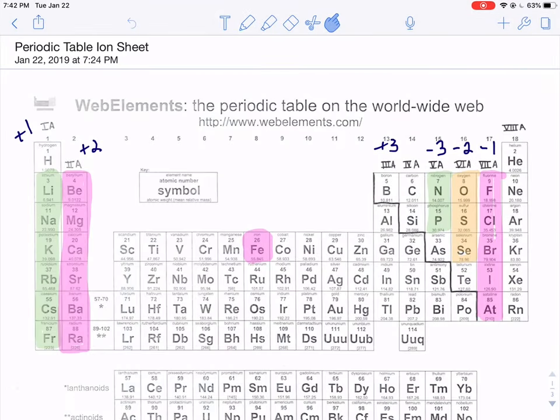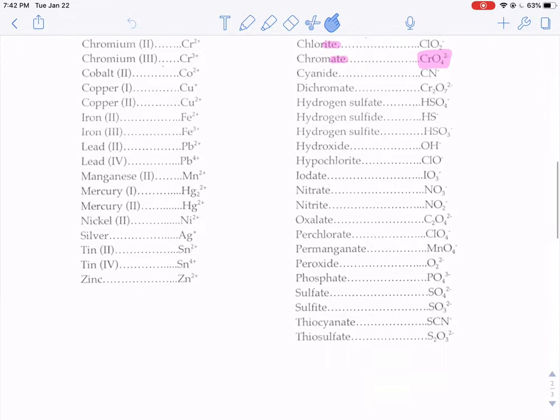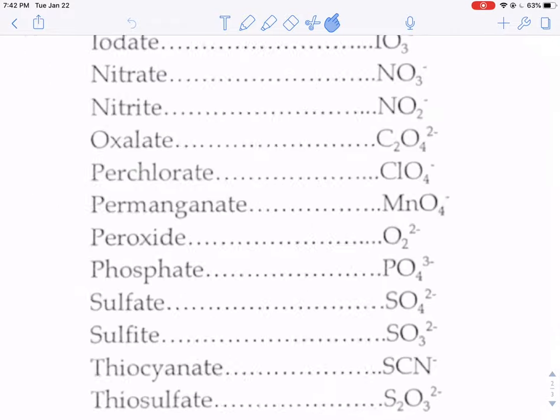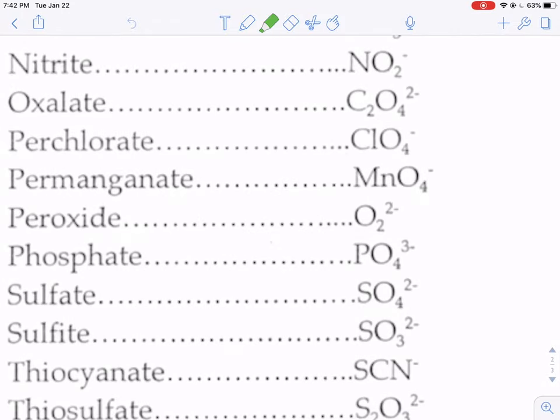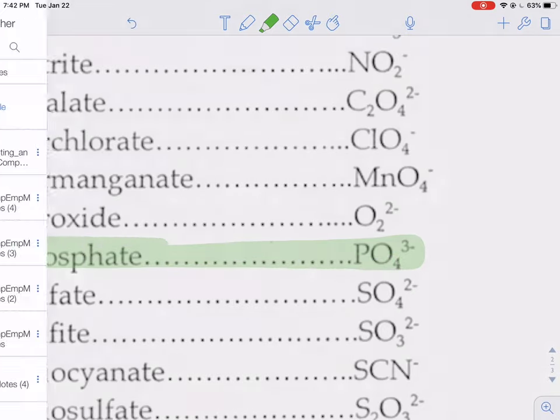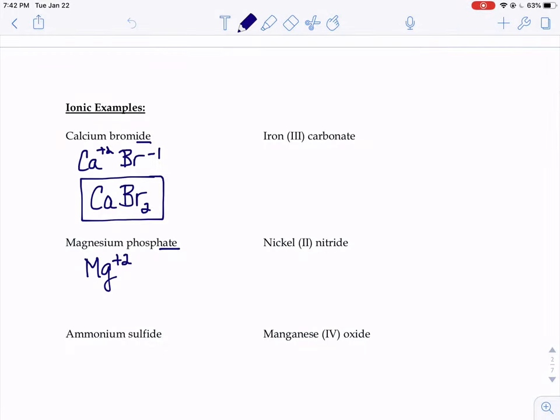When we look for phosphate, phosphate is down here near the bottom on the right hand side. Phosphate is PO4 with a negative three charge. So I'm going to write that down. PO4 with a negative three charge.